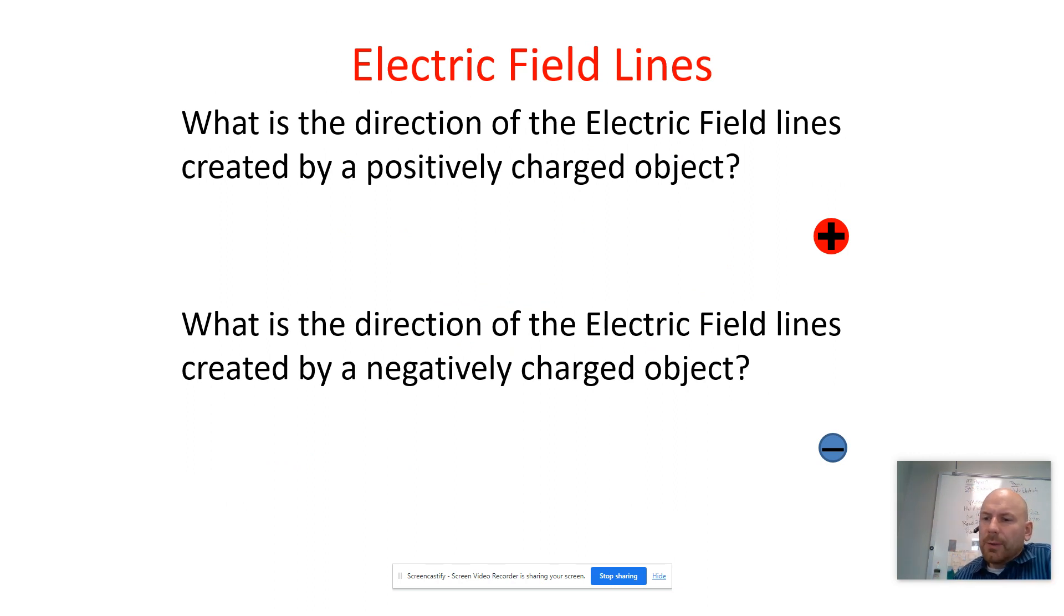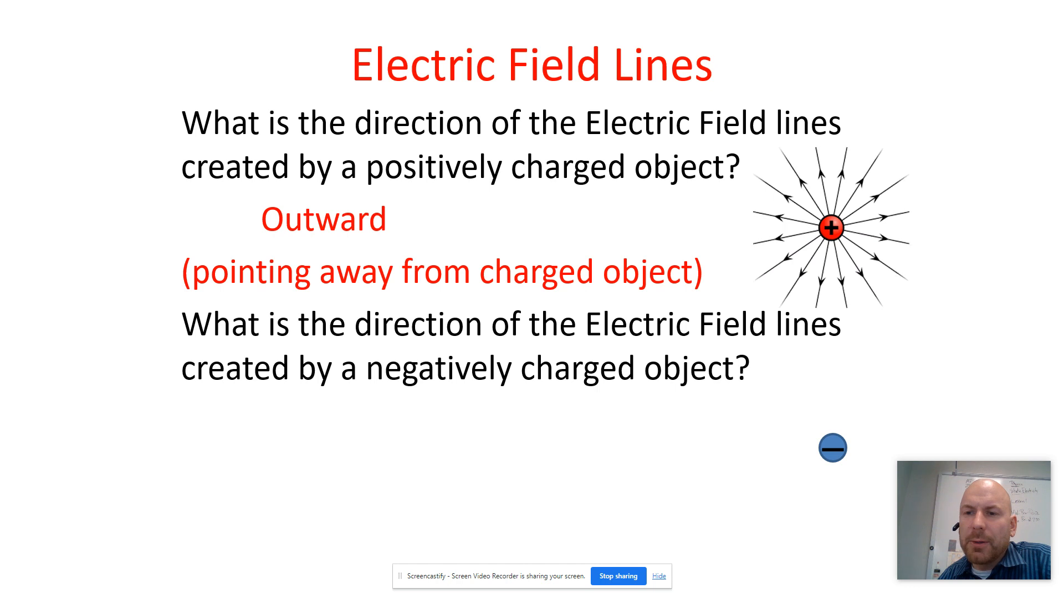So electric field lines. We use these to illustrate electric fields. A positive charged object creates field lines that are going outward, pointing away from the charged object. So it kind of looks like that.